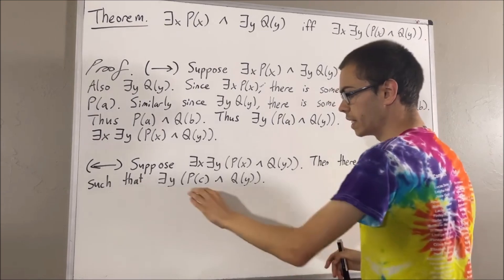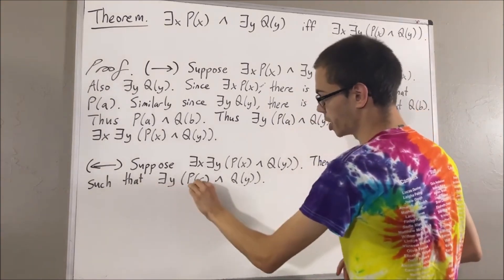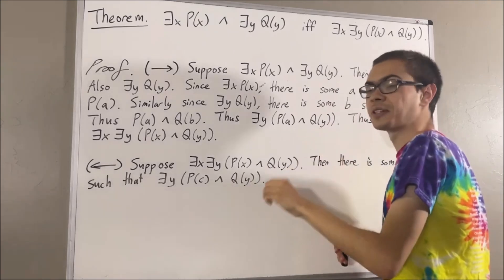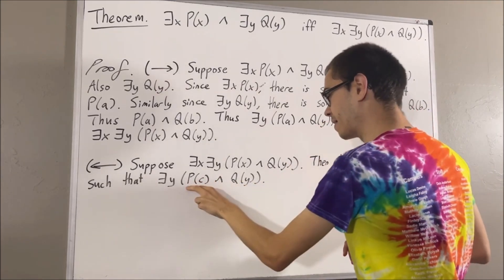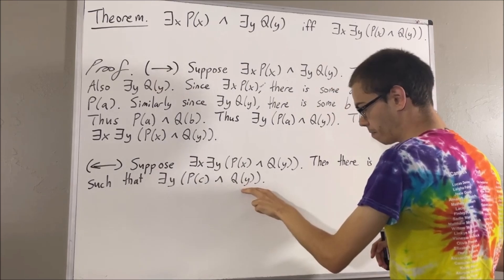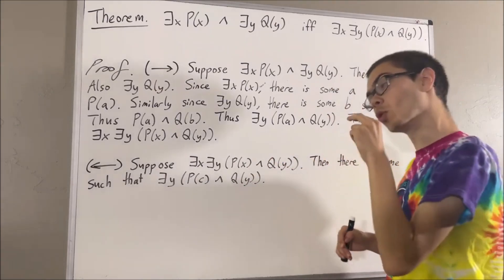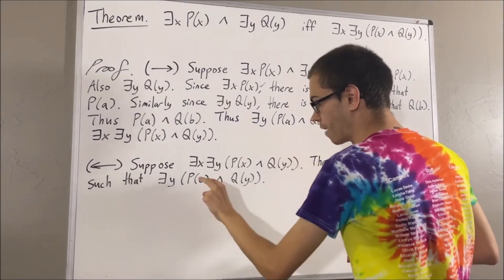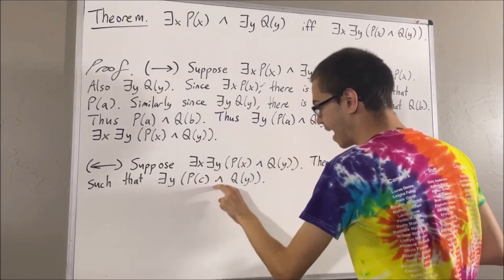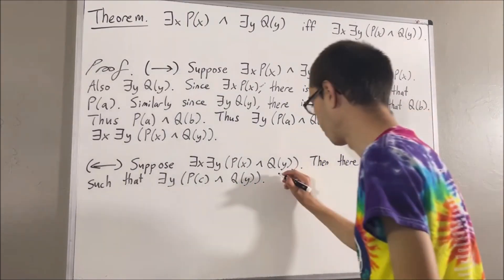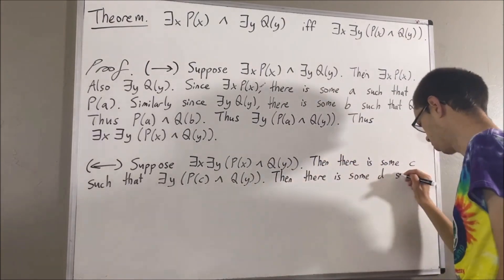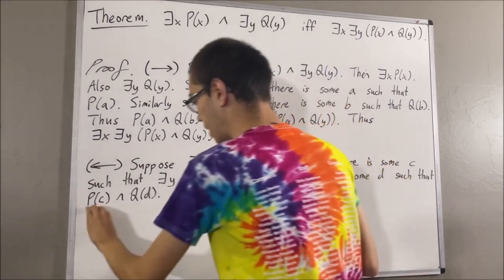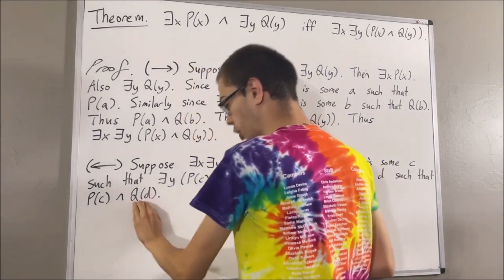Now we see there exists an object y such that this statement is true. That means there's at least one object which makes this statement turn out true. I'll call that object d. So we're instantiating y to be d. So we have that p of c and q of d is true. Then we see that p of c is true, and also q of d is true.